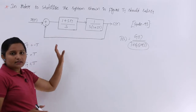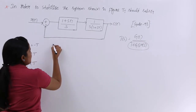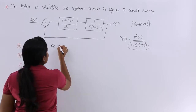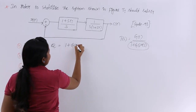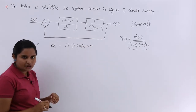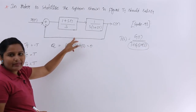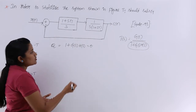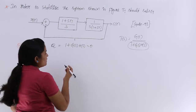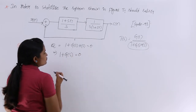Looking at the block diagram, for the characteristic equation I will define Q = 1 + G(S)·H(S) = 0. As you can see, this is a unity feedback system, so H(S) = 1. Therefore the modified characteristic equation becomes 1 + G(S) = 0.